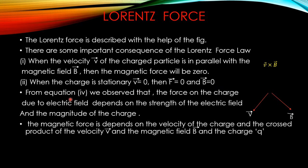From equation number four, we observe that the force on the charge due to the electric field depends on the strength of the electric field and the magnitude of the charge. The magnetic force depends on the velocity of the charge and the cross product of velocity V and magnetic field B and the charge Q. That is: magnetic force FM = Q(V × B).